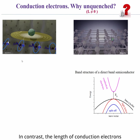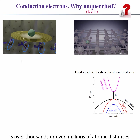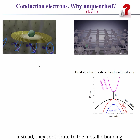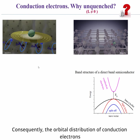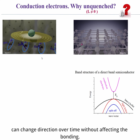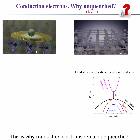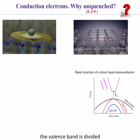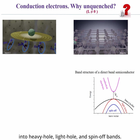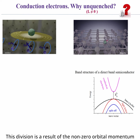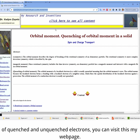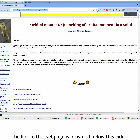In contrast, the extent of conduction electrons spans thousands or even millions of atomic distances. They do not participate in direct bonding between neighboring atoms; instead, they contribute to metallic bonding. Consequently, the orbital distribution of conduction electrons can change direction over time without affecting bonding — this is why conduction electrons remain unquenched. For instance, in a direct band semiconductor, the valence band is divided into heavy hole, light hole, and spin-off bands, a division resulting from the non-zero orbital momentum of electrons within the valence band. For additional details and properties of quenched and unquenched electrons, you can visit the webpage linked below this video.